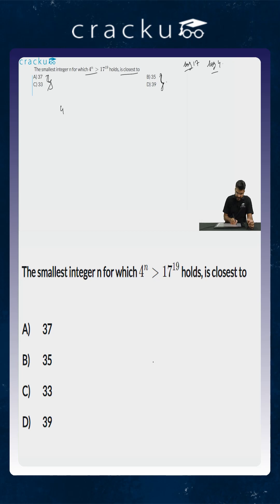Now if you look at 4 to the power n, you know that 4 to the power n is equal to 16 to the power n by 2.